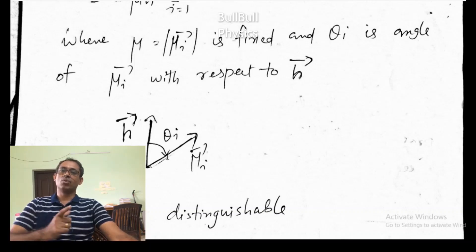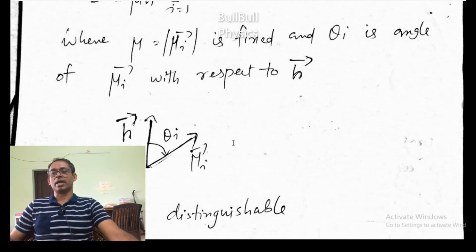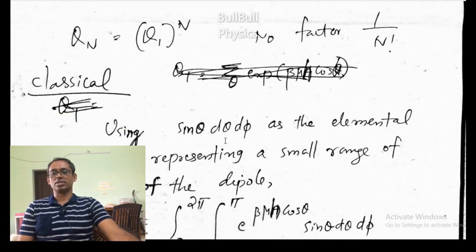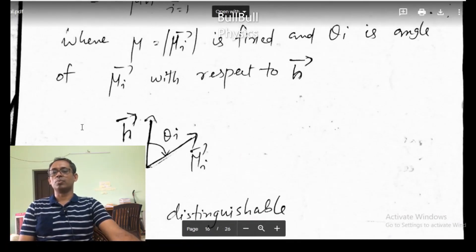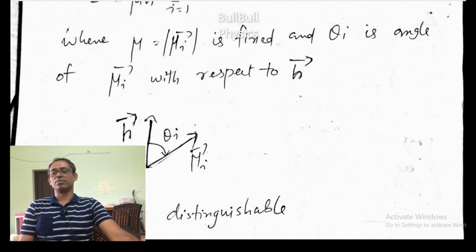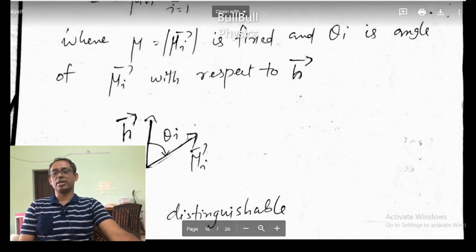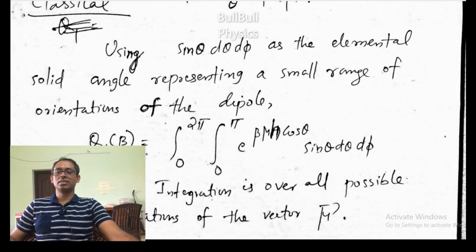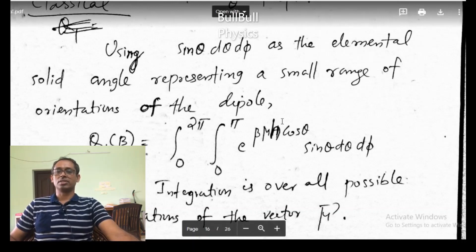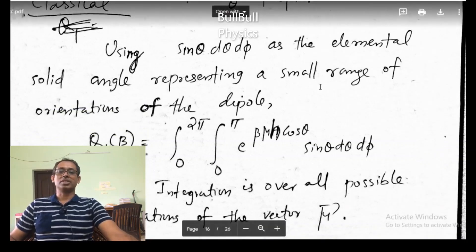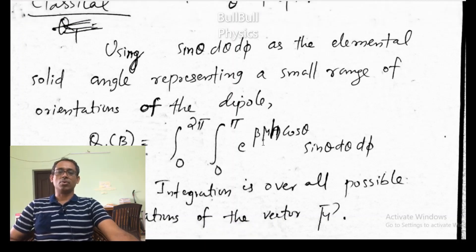To get the cone of possible orientations, we introduce angle phi. For a given theta, phi can change from 0 to 2 pi, and the possible orientation is around the magnetic field or the z-axis. That is taken into account in calculating the partition function. So we have 0 to 2 pi for phi and 0 to pi for theta, and sin theta d theta d phi is the small solid angle representing a small range of orientations of the dipole.